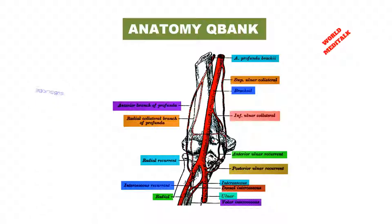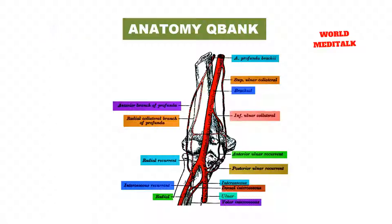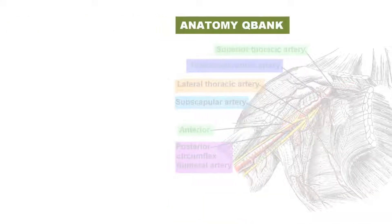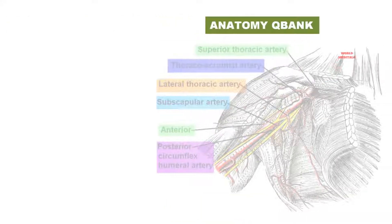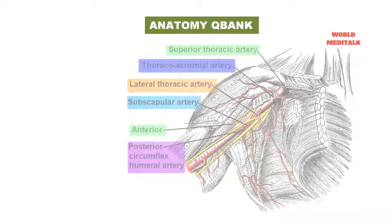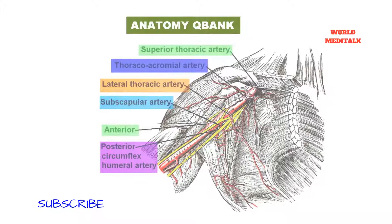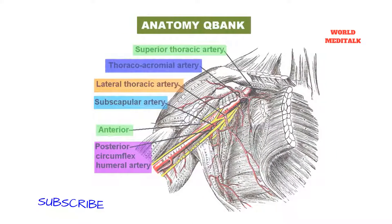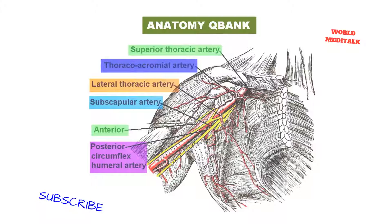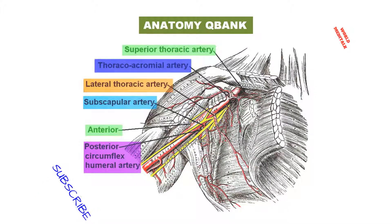The branches anastomosing in front of the lateral epicondyle are the radial recurrent and the terminal part of the profunda brachii. Those behind the lateral epicondyle — more properly described as situated between the lateral epicondyle and the olecranon — are the inferior ulnar collateral, the interosseous recurrent, and the radial collateral branch of profunda brachii.